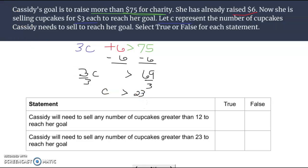So let's say whether the statements below are true or false. Cassidy will need any number of cupcakes greater than 12 to reach her goal. That is false. Cassidy will need to sell any number of cupcakes greater than 23 to reach her goal. That is true.